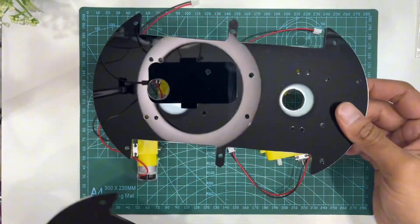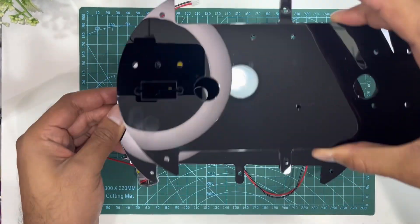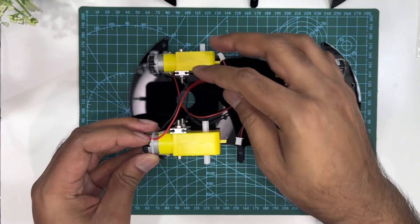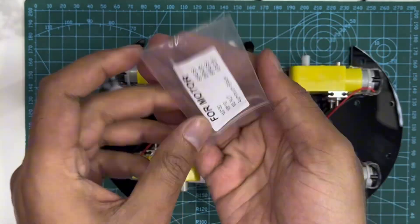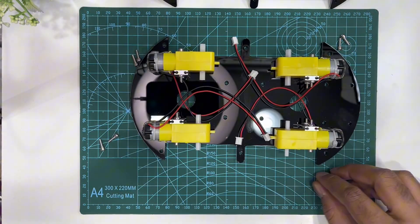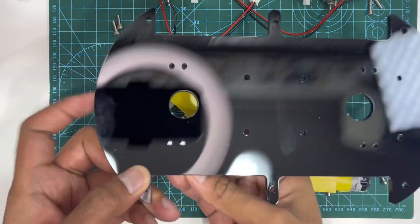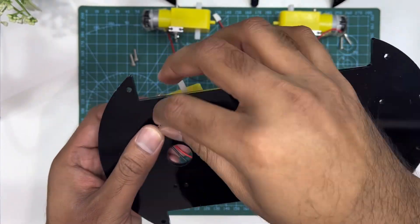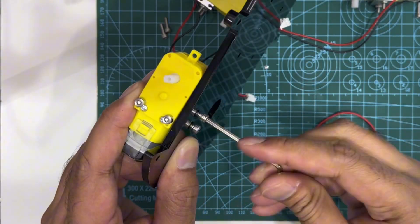Now we'll take our acrylic chassis and attach the motor assemblies. We will use two M3 by 10 hexagon socket screws for each motor. Line up the motor with these holes in the white frame and secure them with the screws.